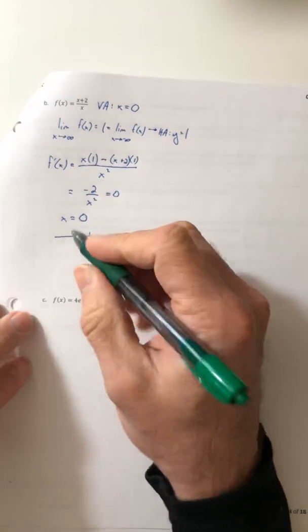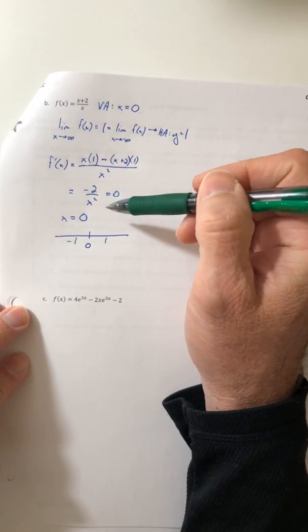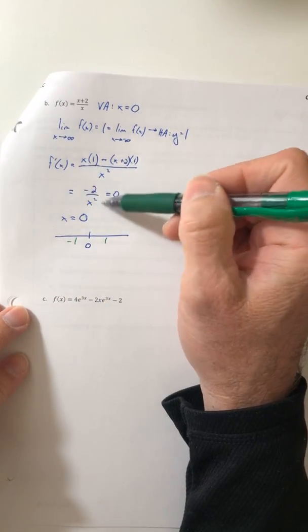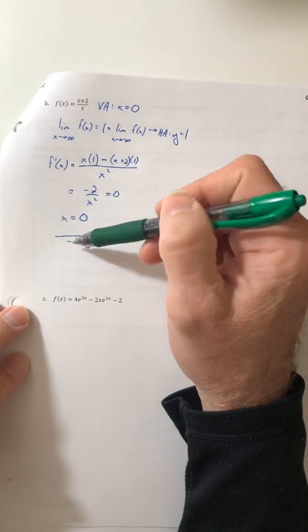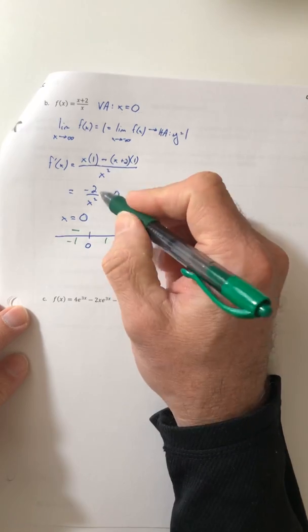So choose some test numbers. We'll go with negative one and one. Plug them into the first derivative. So plug in the negative one. That comes out as a minus. Plug in the positive one. And it comes out as a minus again.